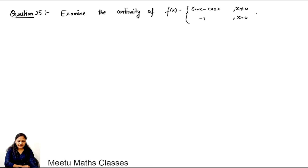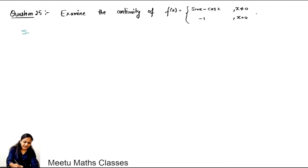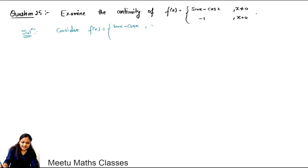Question number 25: examine the continuity of f(x) equals sin x minus cos x when x is not equal to 0, and minus 1 when x equals 0. The domain of the function is the whole real number line.